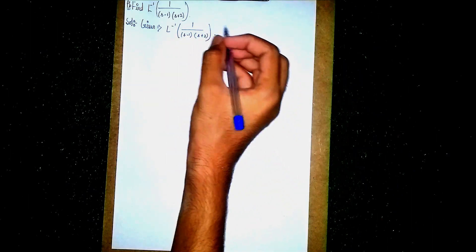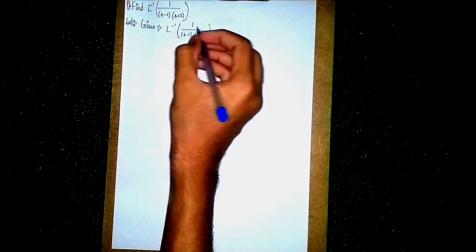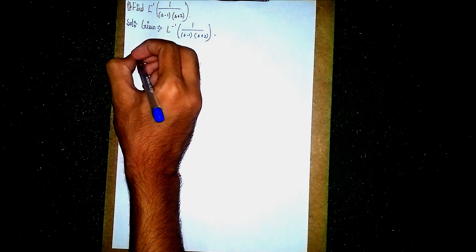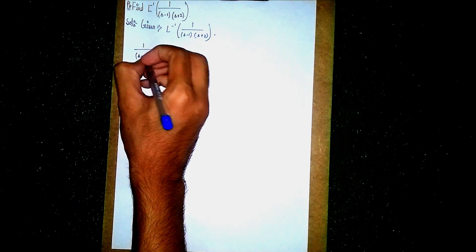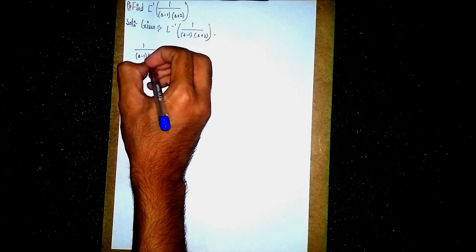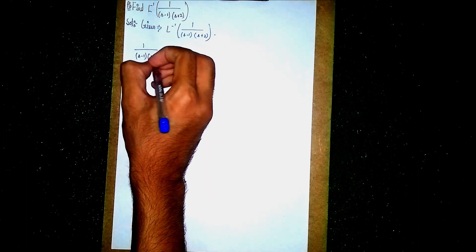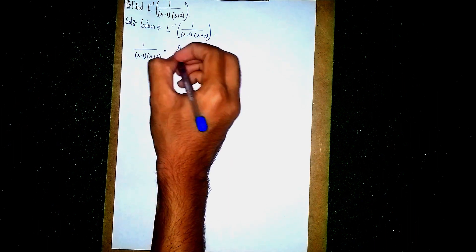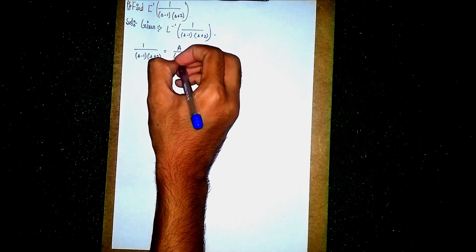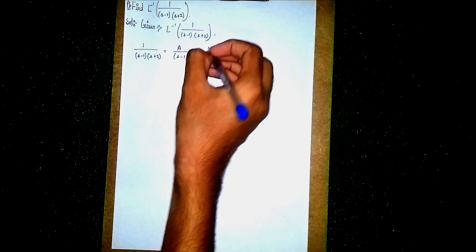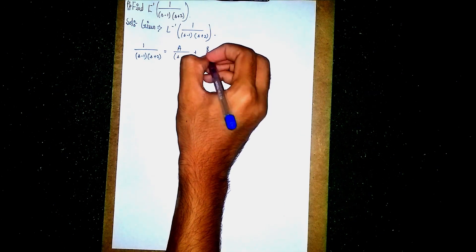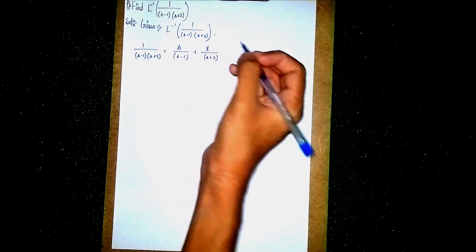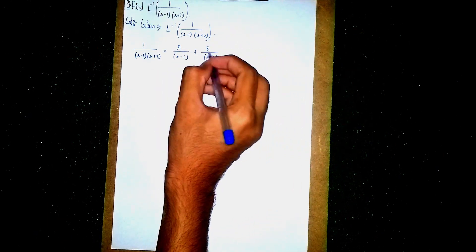Using partial fractions, take 1 by (s minus 1) into (s plus 2) equal to A by (s minus 1) plus B by (s plus 2). This is the partial fraction method setup. Now cross multiply it.